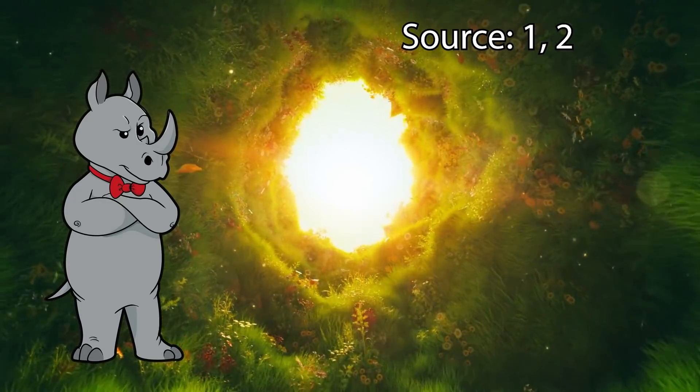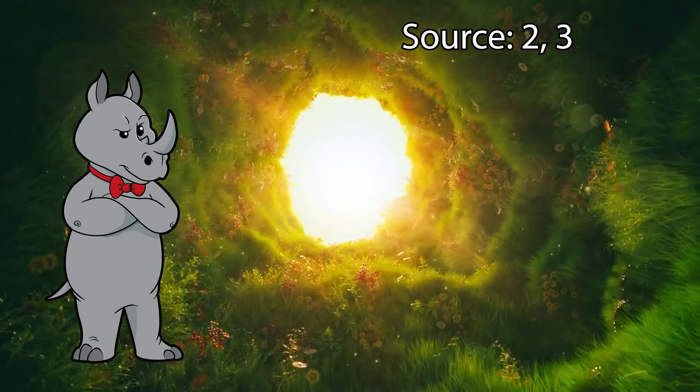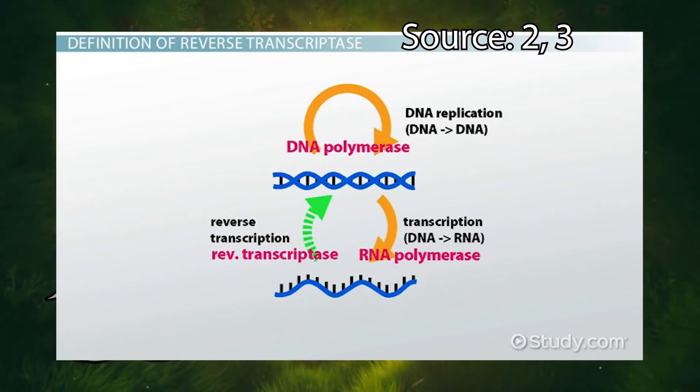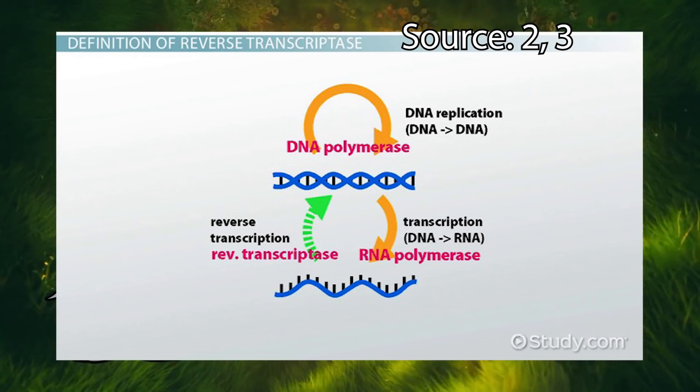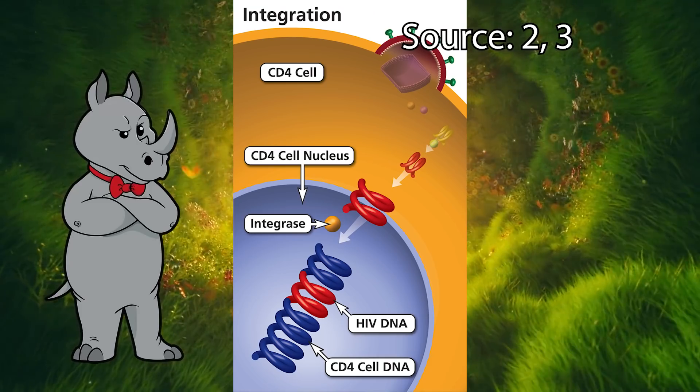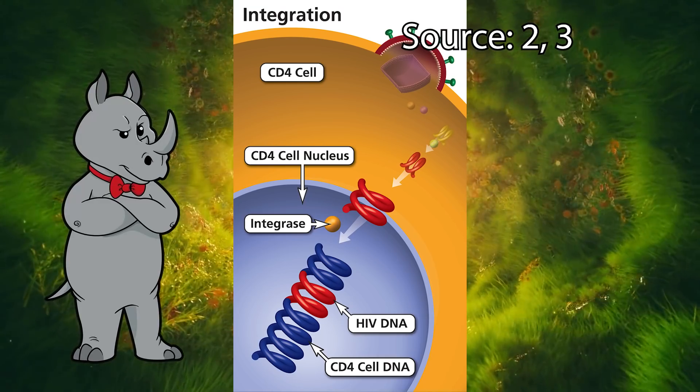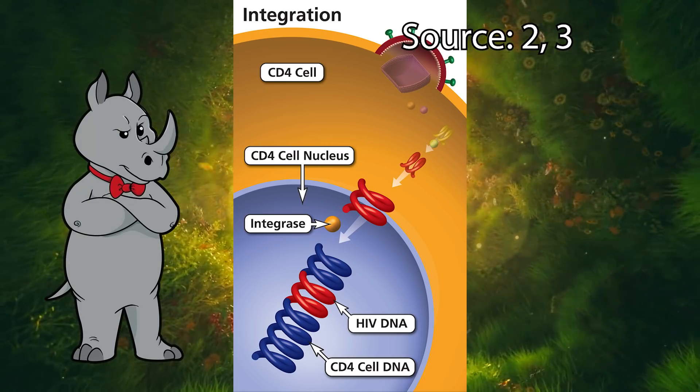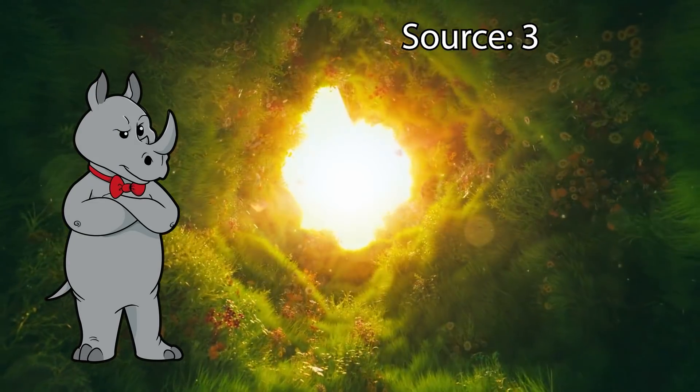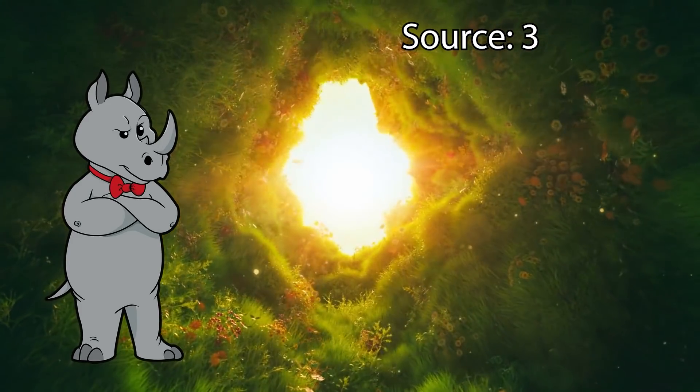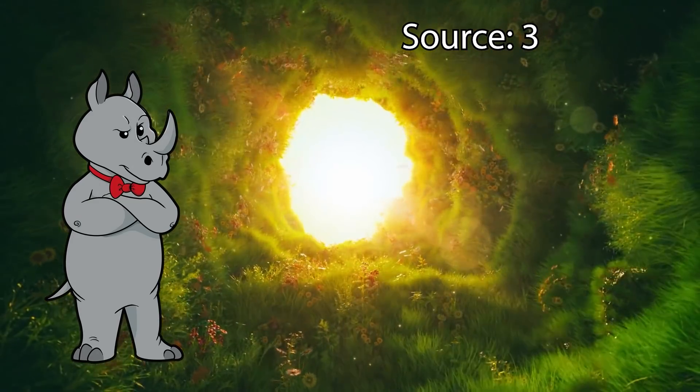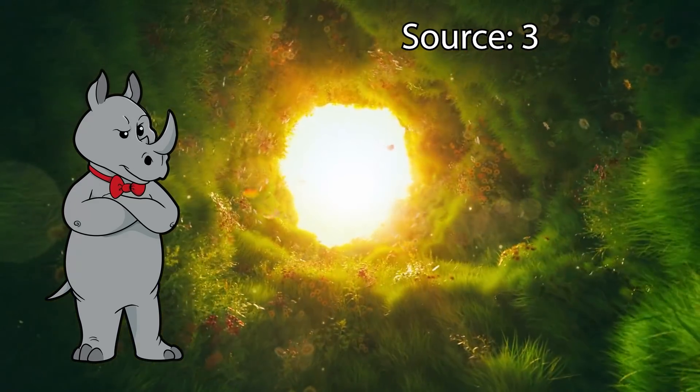Retro as a prefix essentially just means backward. The method that retroviruses have developed for accomplishing this task is to use an enzyme that is aptly named reverse transcriptase to transcribe the RNA in reverse back into DNA. And then it uses another aptly named enzyme called integrase to integrate its genetic material directly into the host's DNA. Unlike a DNA virus whose presence will eventually kill the cell, there is not necessarily a significant detriment for a host cell that becomes infected, and occasionally the infection can even be beneficial.